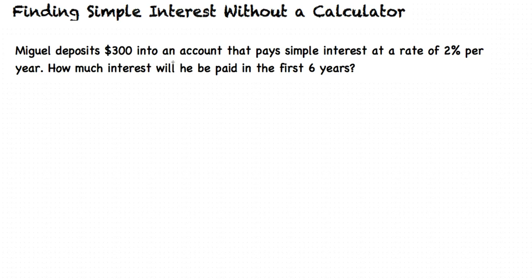Miguel deposits $300 into an account that pays simple interest at a rate of 2% per year. How much interest will he be paid in the first 6 years?